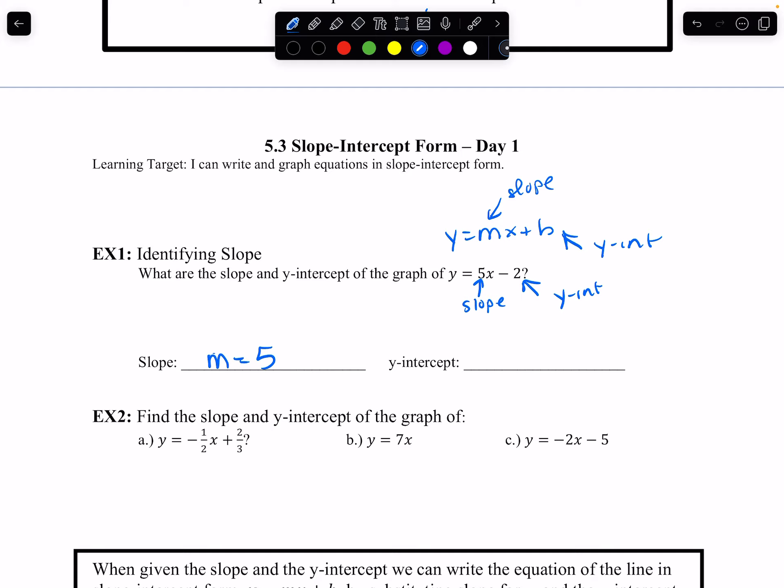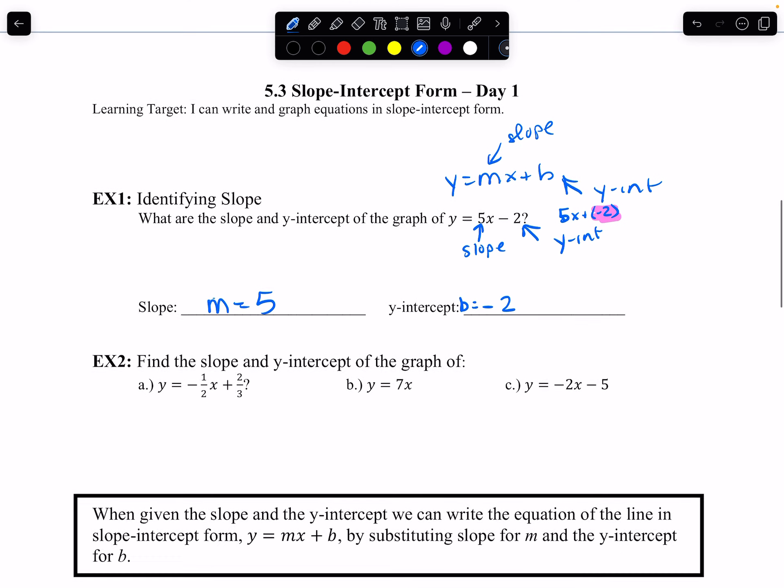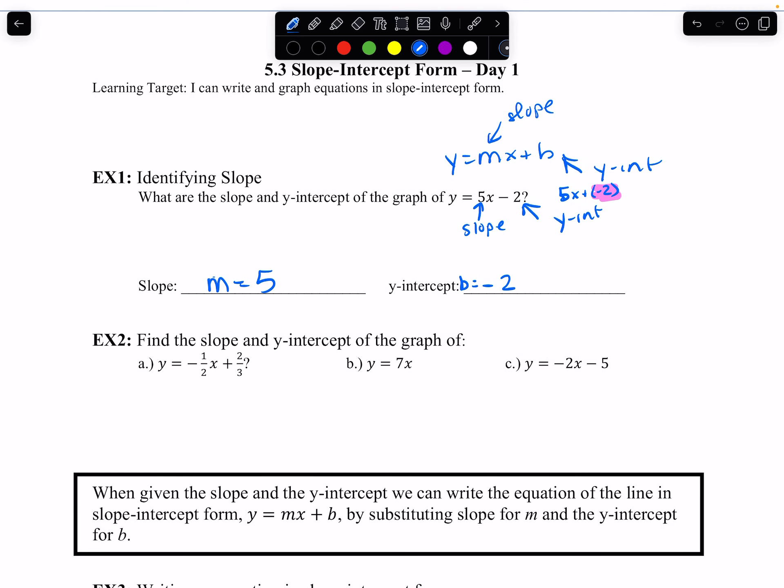And this is the y-intercept. Now what we need to think about this one is what does that negative do? So I'm going to say that, but I'm going to remind you that this could also be written as 5x plus negative 2. So you please notice that our y-intercept will be negative, b equals negative 2. So we're going to find the slope and y-intercepts of the graphs below.